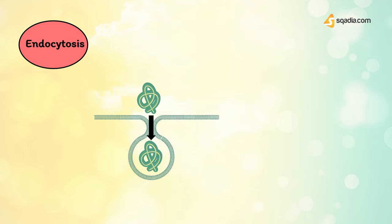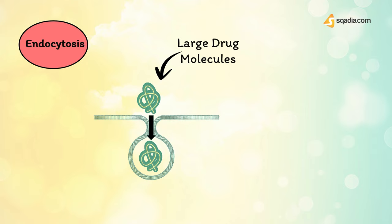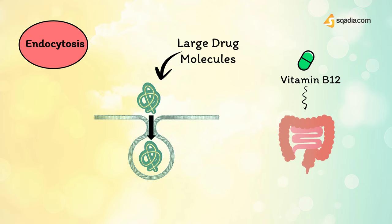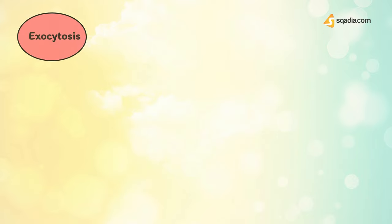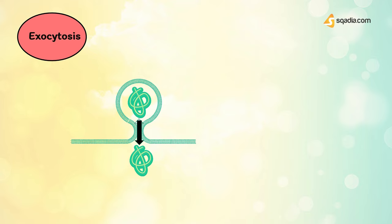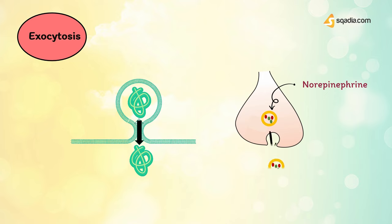Endocytosis and exocytosis are both types of absorption used to transport drugs of exceptionally large size across the cell membrane. Endocytosis involves engulfment of a drug by the cell membrane and transport into the cell by pinching off a drug-filled vesicle. Vitamin B12 is transported across the gut wall by endocytosis. Exocytosis is the reverse of endocytosis — many cells use exocytosis to secrete substances out of the cell through a similar process of vesicle formation. Certain neurotransmitters such as norepinephrine are stored in intracellular vesicles in the nerve terminal and released by exocytosis.